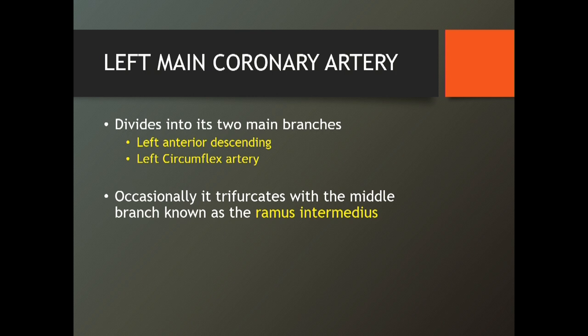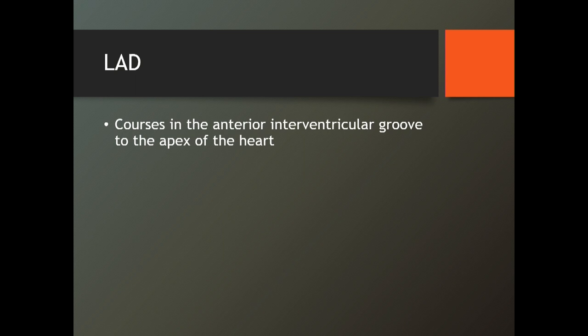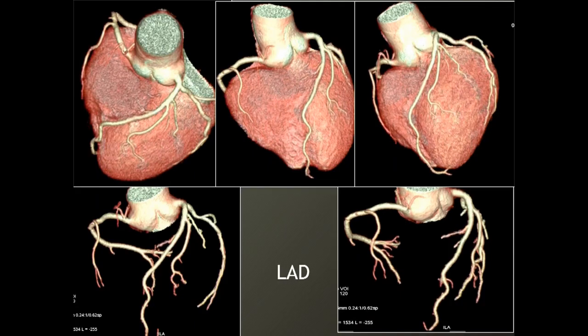Now comes the left main coronary. It divides into two main branches: the left anterior descending — LAD — and the left circumflex artery. Occasionally it will trifurcate and you get one more branch between these two, called the ramus intermedius. The LAD courses in the anterior interventricular groove — not atrioventricular, but interventricular — going down between the two ventricles to the apex of the heart. LAD is also called the artery of the widow. LAD is a very, very important artery — if it gets blocked, the chances of sudden death are very, very high.